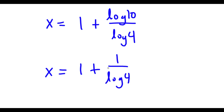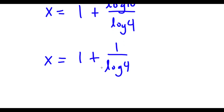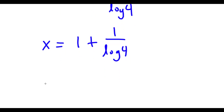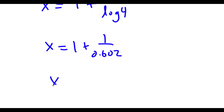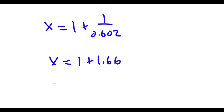And log 4 is equal to 0.602. So now I have x is equal to 1 plus 1 over 0.602, which is equal to 1 plus 1.66, meaning x is equal to 2.66.